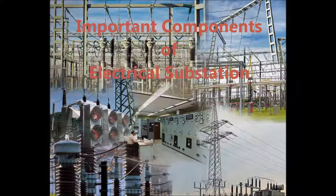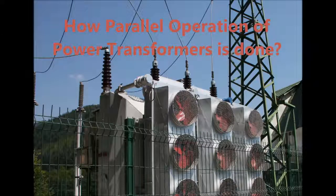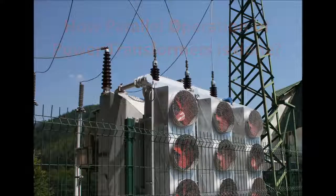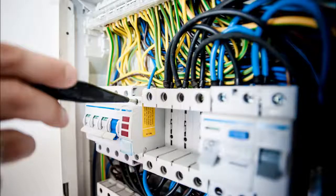In the last video we saw important components of electrical substation in brief. Among those components, the power transformer has a significant role in the substation. Let's see how parallel operation of power transformers is done. Sometimes due to fault or maintenance work, one of the power transformers is shut down. Hence, to transfer the load of the transformer in OFF condition onto other transformers, parallel operation is done.